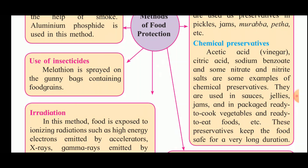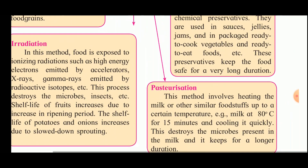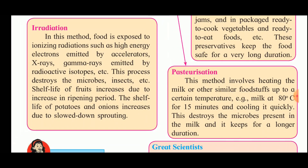The third method is irradiation. In this method the food is exposed to ionizing radiations such as high-energy electrons emitted by accelerators, X-rays, and gamma rays emitted by radioactive isotopes. This process destroys microbes and insects. The shelf life of fruits increases due to an increase in ripening period, and the shelf life of potatoes and onions increases due to slowed-down sprouting.